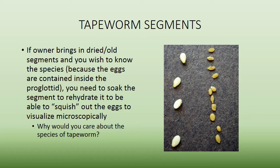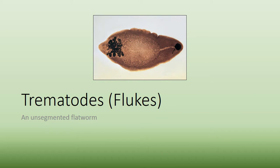When an owner brings in tapeworm segments, you need to recognize them as proglottids. Dried segments look like sesame seeds or grains of rice. To identify the exact species, rehydrate the segments by soaking them, squish them on a microscope slide, and the eggs will squirt out. However, all tapeworms are treated with the same drugs regardless of species, so species identification rarely changes clinical management.